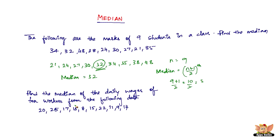To do that, you first have to arrange this in ascending order. So you get: 9, 11, 14, 15, 17, 18, 20, 22, and 25.